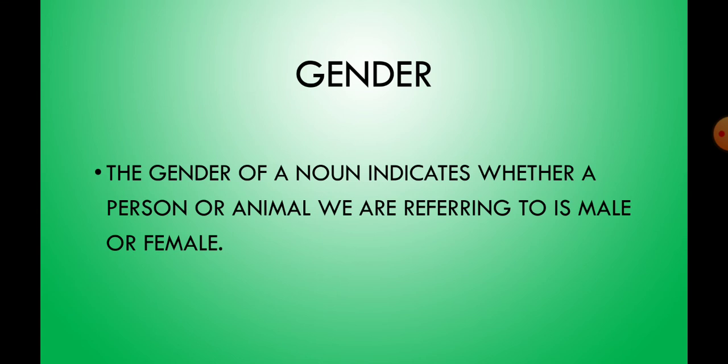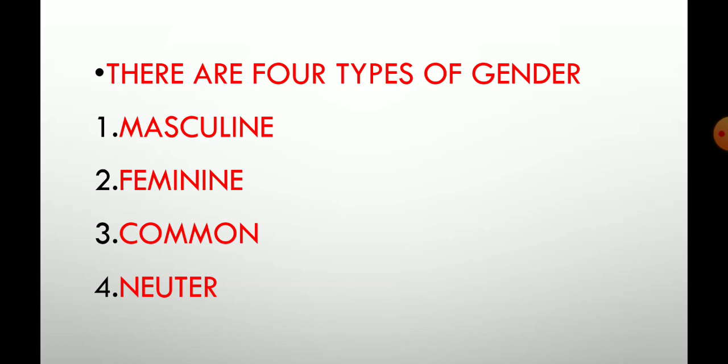The gender of a noun indicates whether a person or animal we are referring to is a male or a female. There are four types of genders: masculine gender, feminine gender, common gender, and neuter gender.